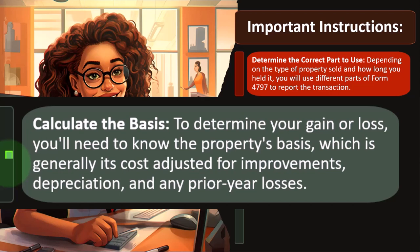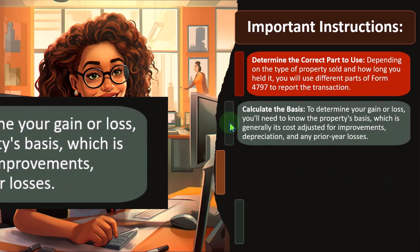But you also have depreciation. So we're really talking about the depreciated cost that you sold it for. Depreciation could be accelerated oftentimes in the tax code, which could result in having a lower basis that you're calculating the gain on. To determine your gain or loss, you'll need to know the property's basis, which is generally its cost adjusted for improvements, depreciation, and any prior year losses.